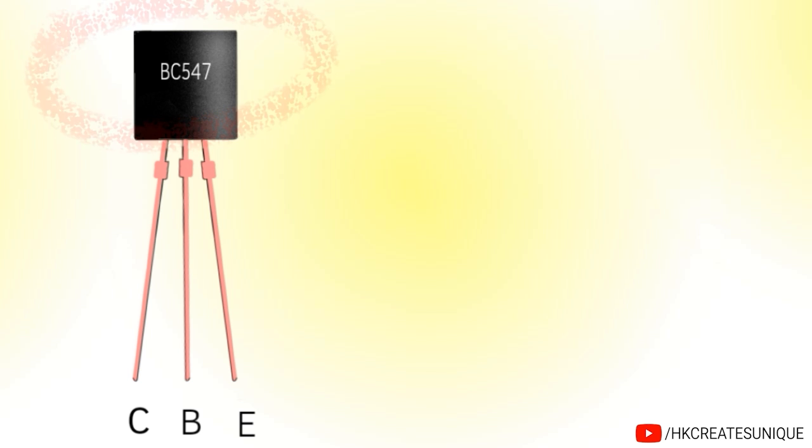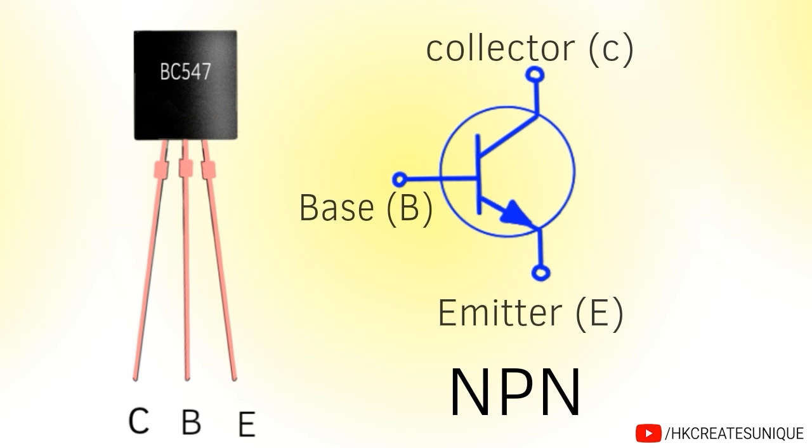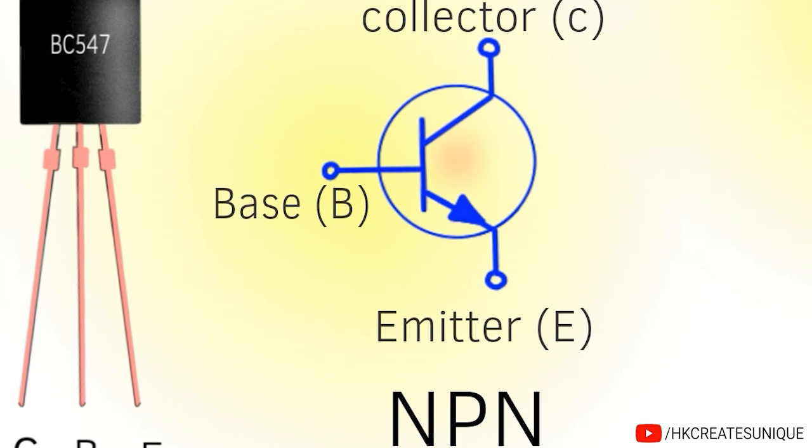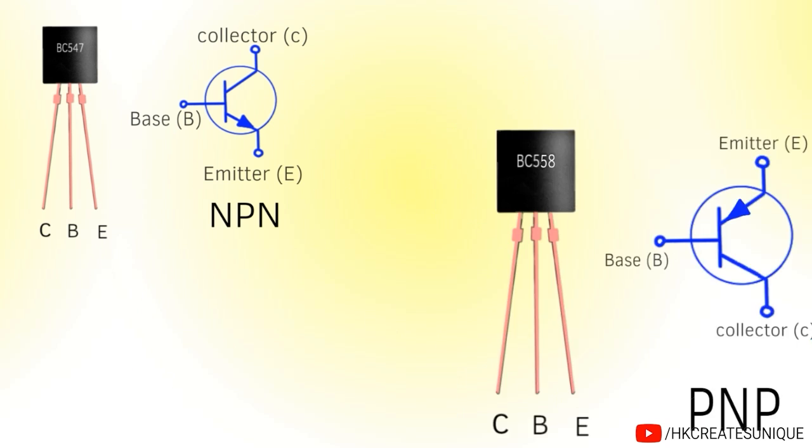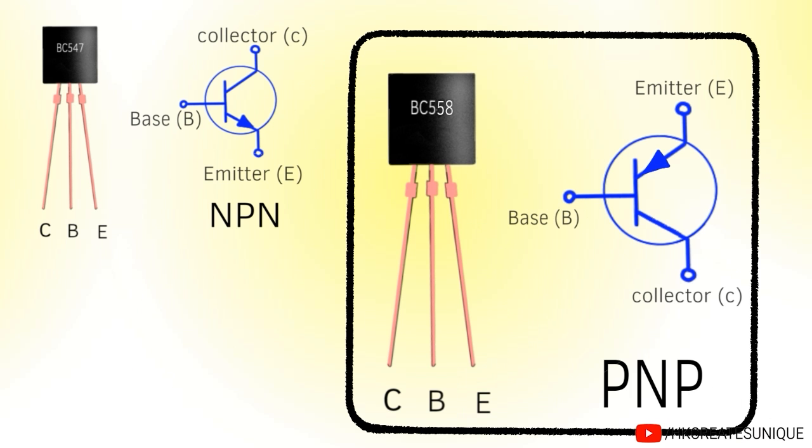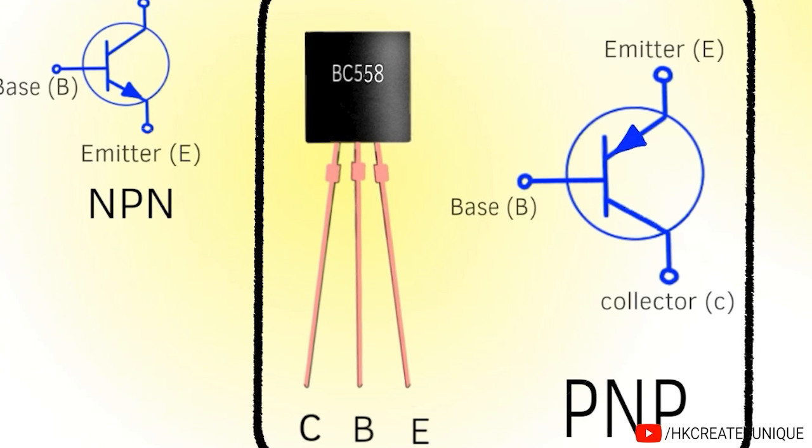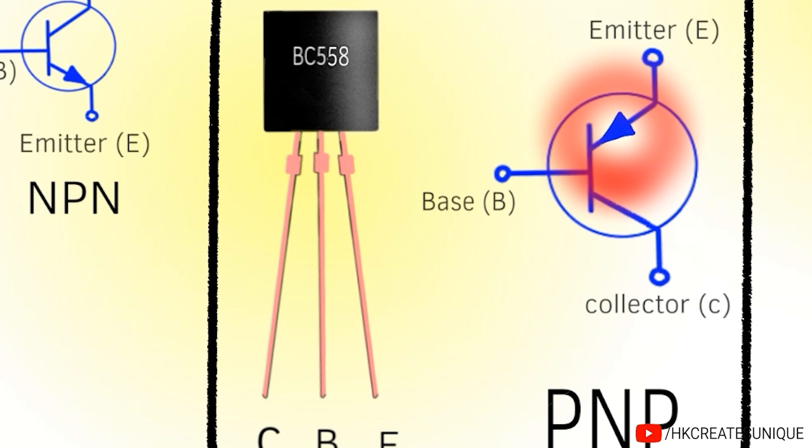The BC547 is a generic NPN type transistor. The NPN transistor symbol shows that the current direction is away from the base and towards the emitter. There also exist PNP transistors. The PNP transistor symbol shows that the current direction is away from the emitter and towards the base.